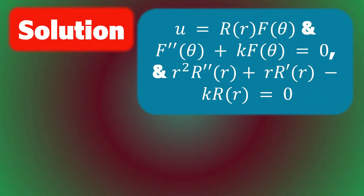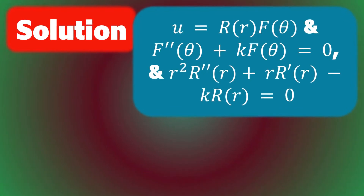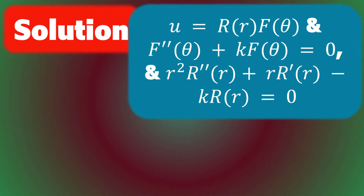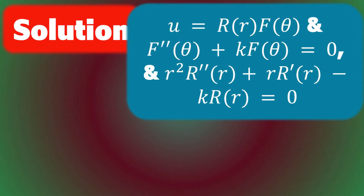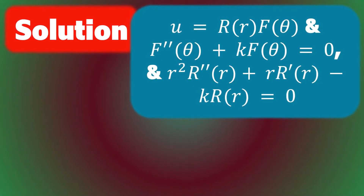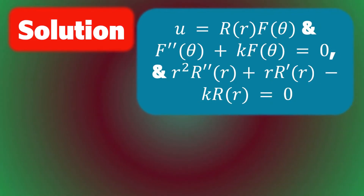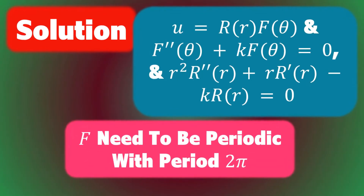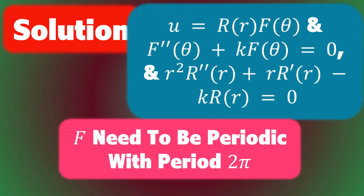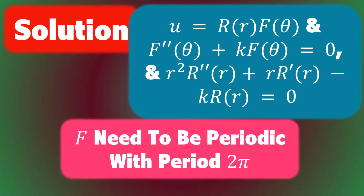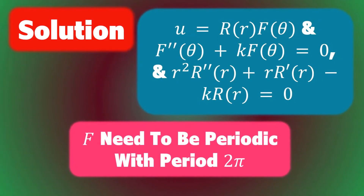To solve this equation we can use separation of variables as before, so u equals capital R of r times capital F of theta, and obtain two equations. First, the second derivative of F of theta plus k times F of theta equals zero; and r squared times R double dash plus r times R dash minus k times R equals zero. We need to have the same solution for theta equals zero and theta equals two pi, which means that F needs to be periodic with period two pi, so we need k to be zero or a positive integer.